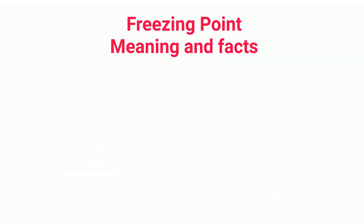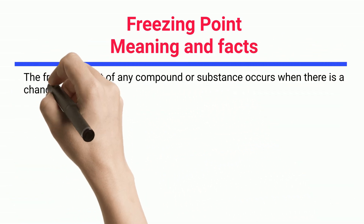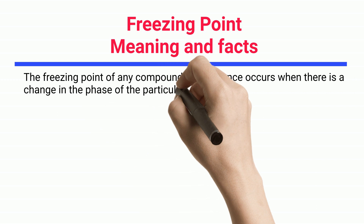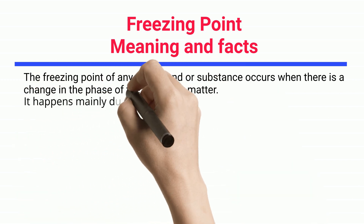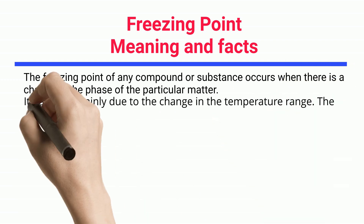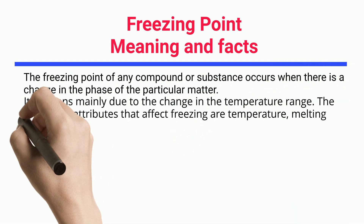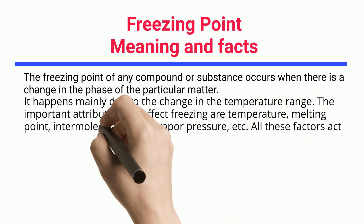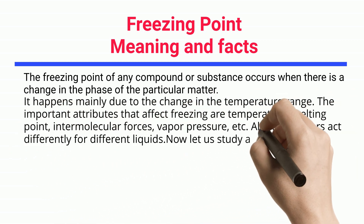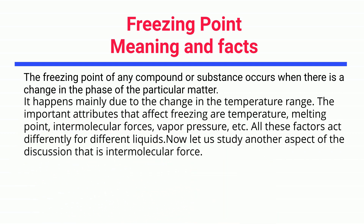Freezing point meaning and facts: the freezing point of any compound or substance occurs when there is a change in the phase of the particular matter. It happens mainly due to the change in the temperature range. The important attributes that affect freezing are temperature, melting point, intermolecular forces, vapor pressure, etc. All these factors act differently for different liquids.